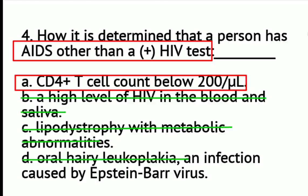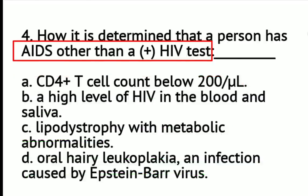Besides a CD4 cell count below 200, the presence of opportunistic infections like toxoplasmosis, infectious mononucleosis, Kaposi's sarcoma, cancer, PTB, and pneumonia are also signs that HIV has progressed to AIDS. So AIDS is indicated when opportunistic infections are also present. The correct answer is letter A.